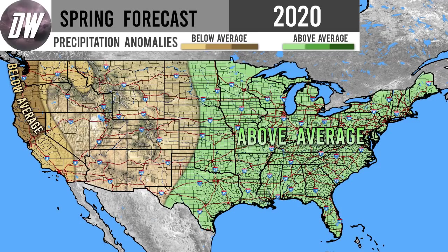We also have an above average precipitation region out east for Texas, Oklahoma, Kansas, Nebraska, and the Dakotas, and anywhere to the east of there we're going to be dealing with some slightly above average precipitation for all of these regions in the central and eastern United States. We're about to get into our moderately above average precipitation regions, and then we'll get into our temperature forecast.